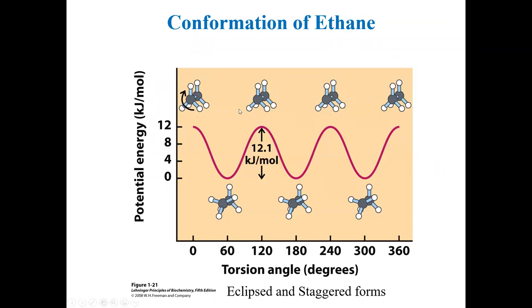The conformations of ethane arise because of freedom of rotation around the single C-C bond. When the front carbon's hydrogens are in eclipsed conformation with the back carbon's hydrogens, potential energy is highest — most unstable. Once staggered, they reach the lowest energy conformation.